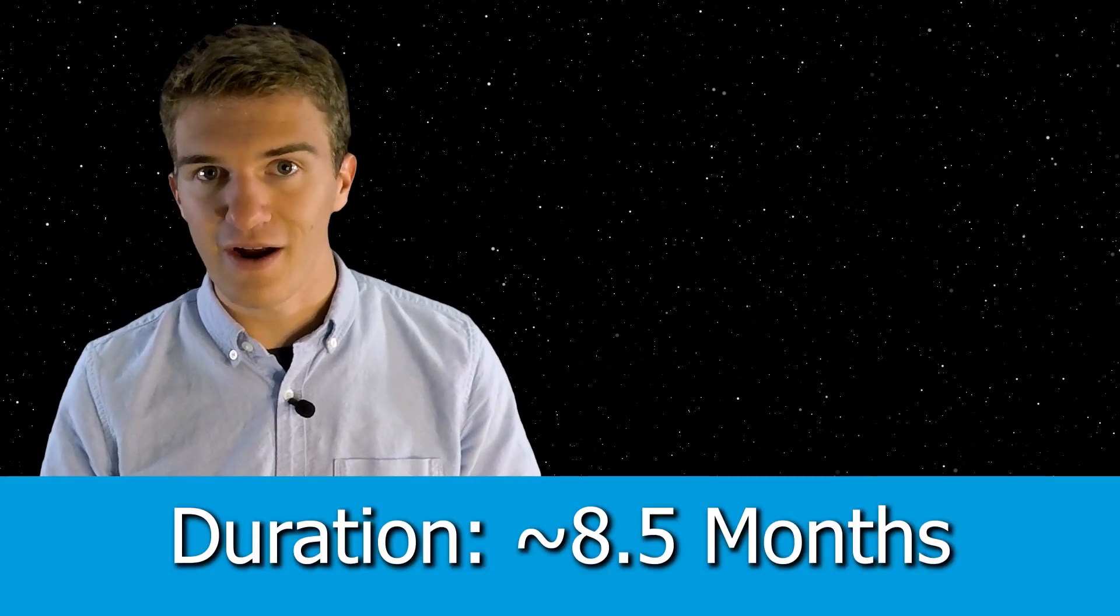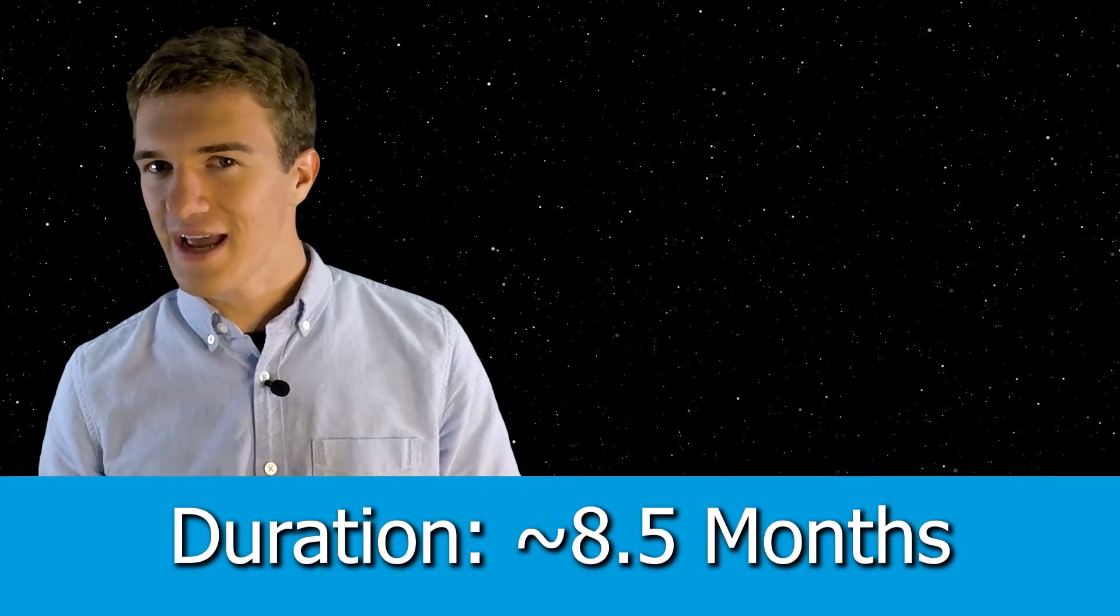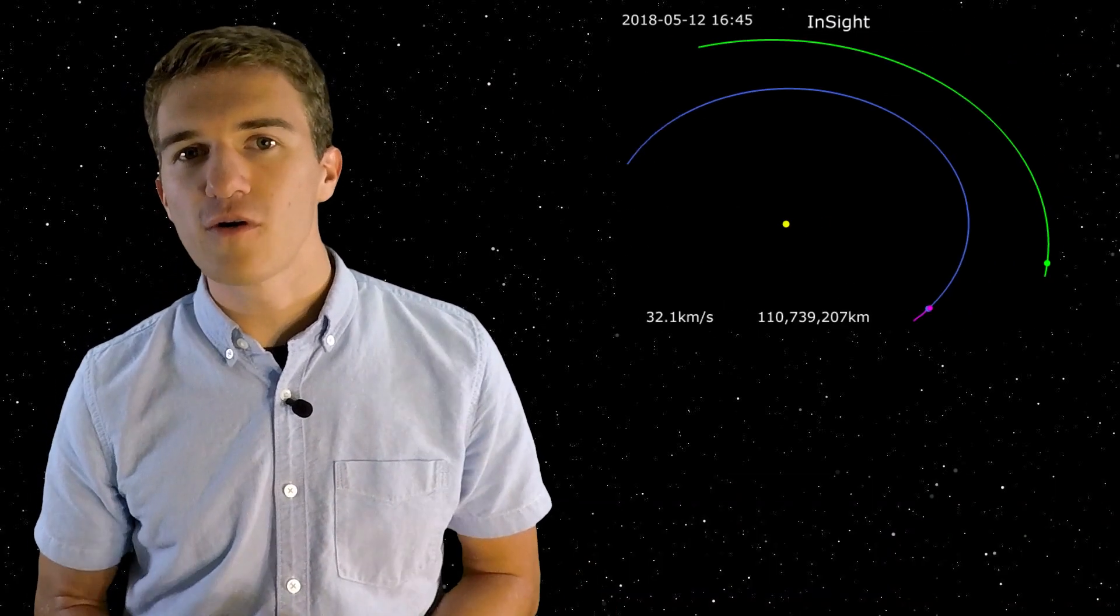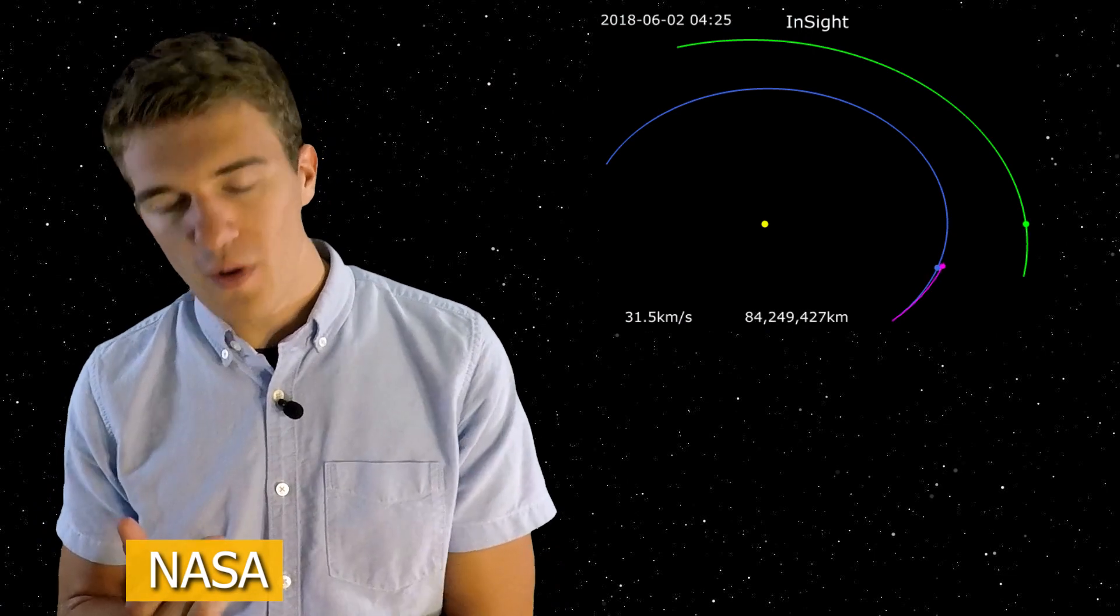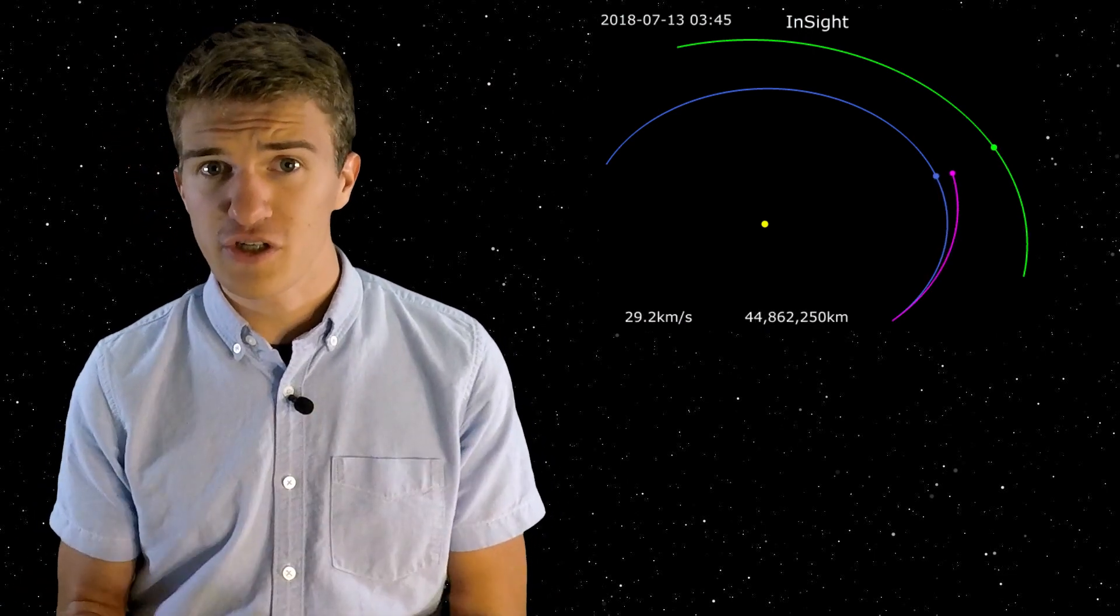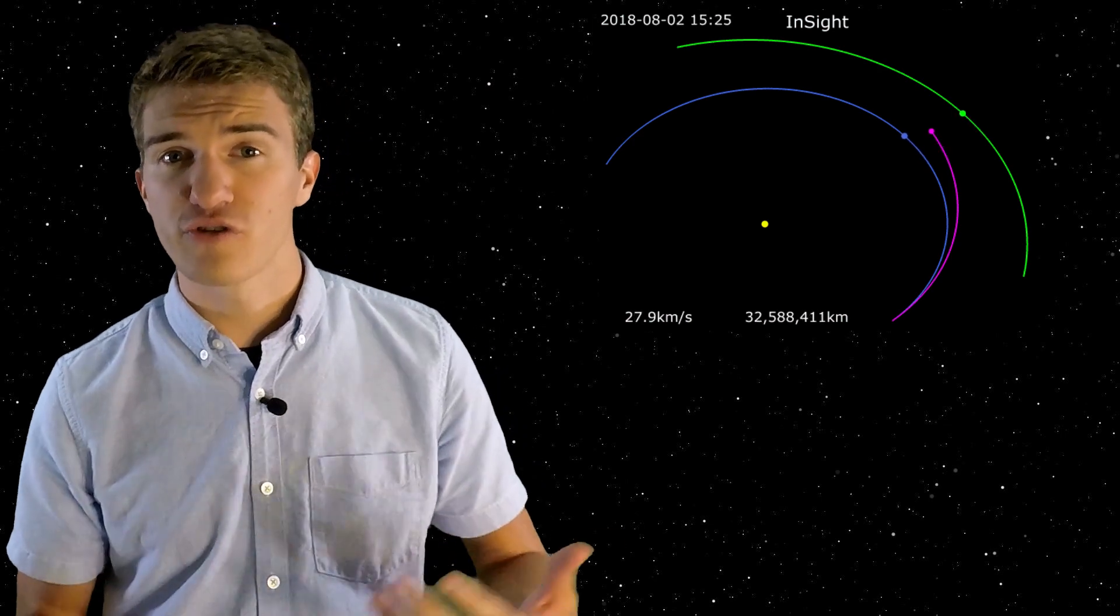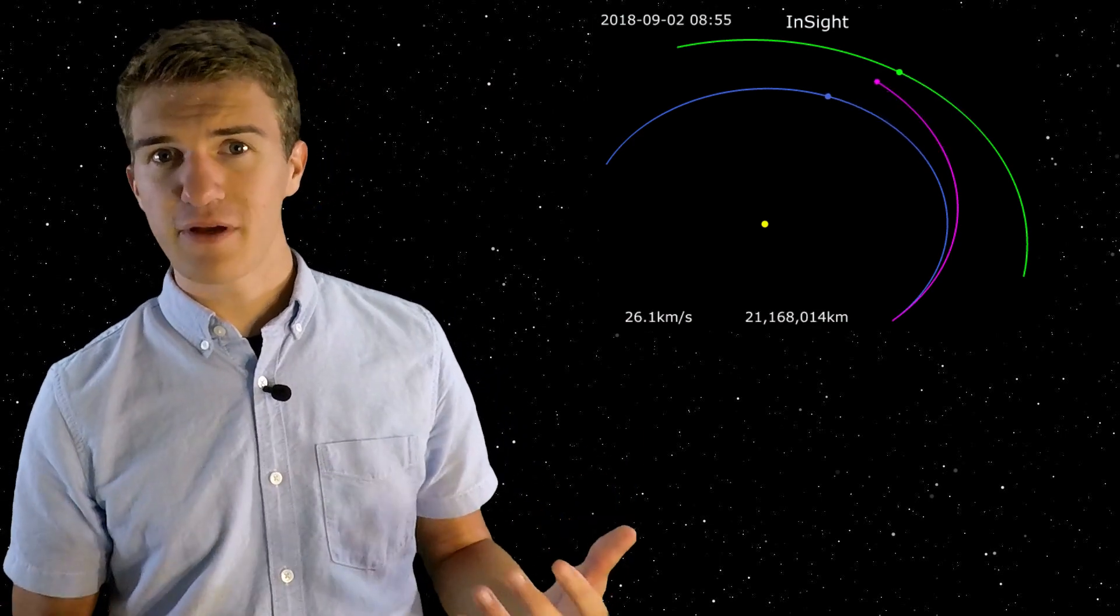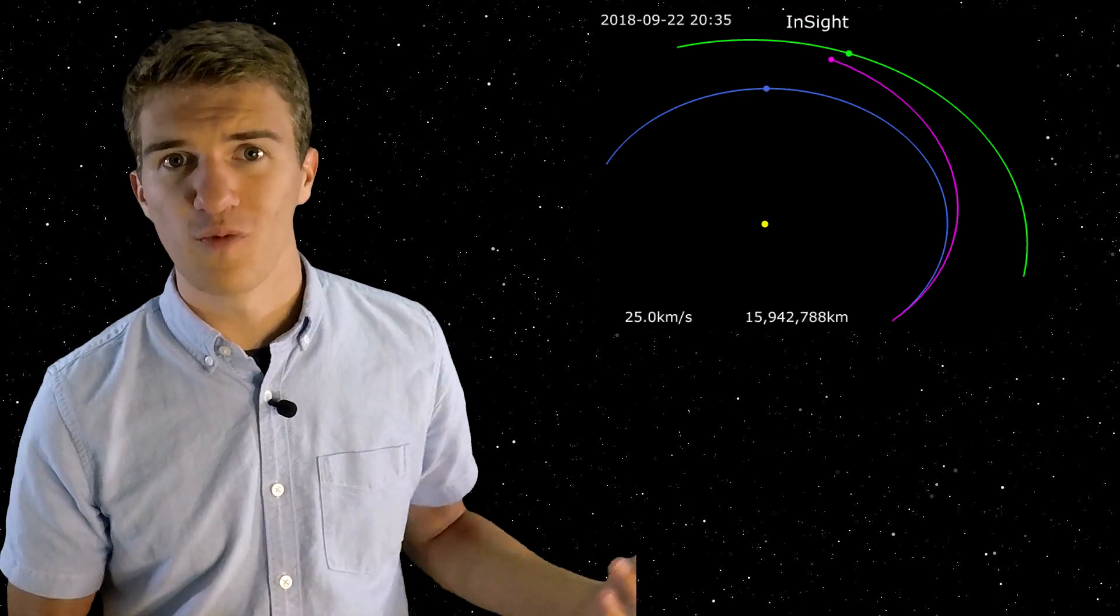And in this case, where we're going from Earth to Mars, it usually takes about eight and a half months to get there. But why is it eight and a half months and not six to eight? As I mentioned before, depending on how much fuel you have, how much your spacecraft weighs, as well as when you actually launch your spacecraft, depends on which trajectory you choose. So you might actually not be choosing the most fuel efficient one.